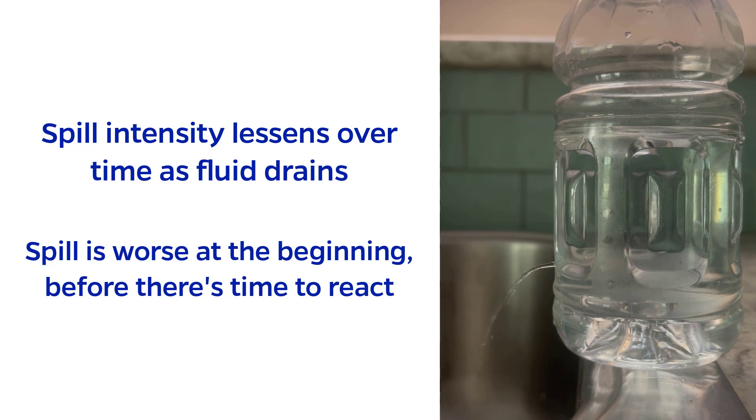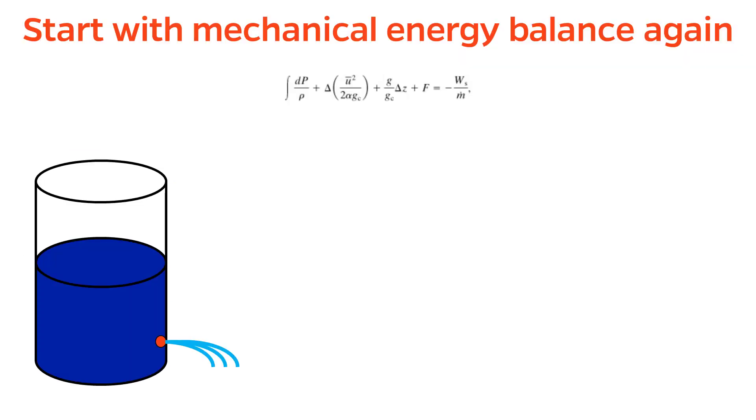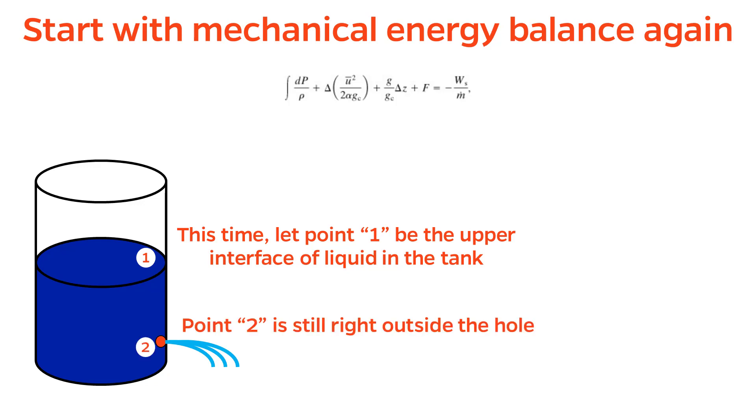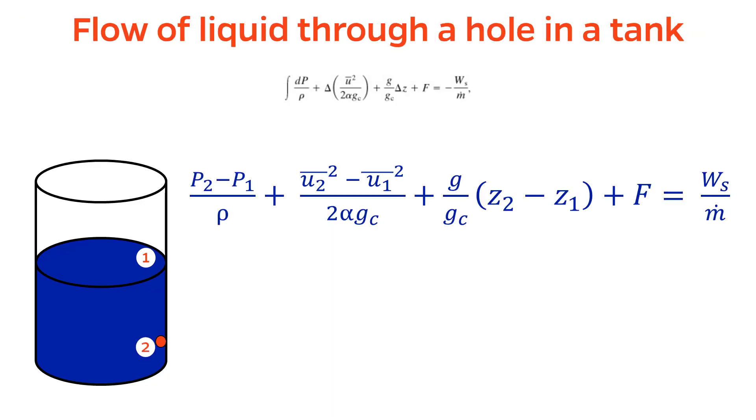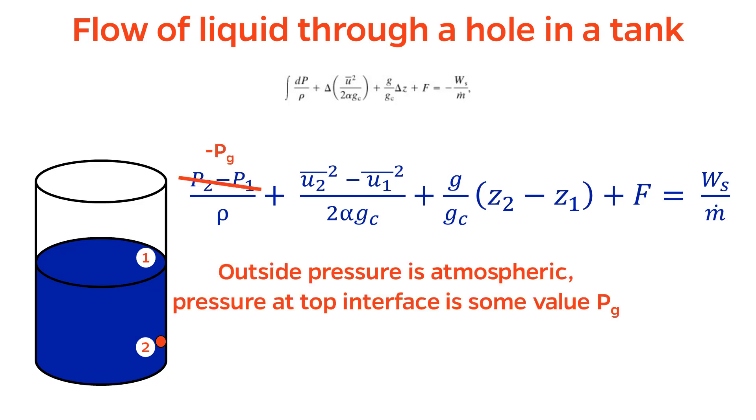The derivation of this source model starts again with the mechanical energy balance. Except this time, let's define point 1 to be the upper interface of liquid in the tank. Point 2 is still directly outside the hole. We are still talking about liquids, so incompressibility means we can again change the integral to a delta. Furthermore, the pressure outside is atmospheric, and the pressure inside the tank is some value P gauge. Therefore, the pressure difference is just negative P gauge.